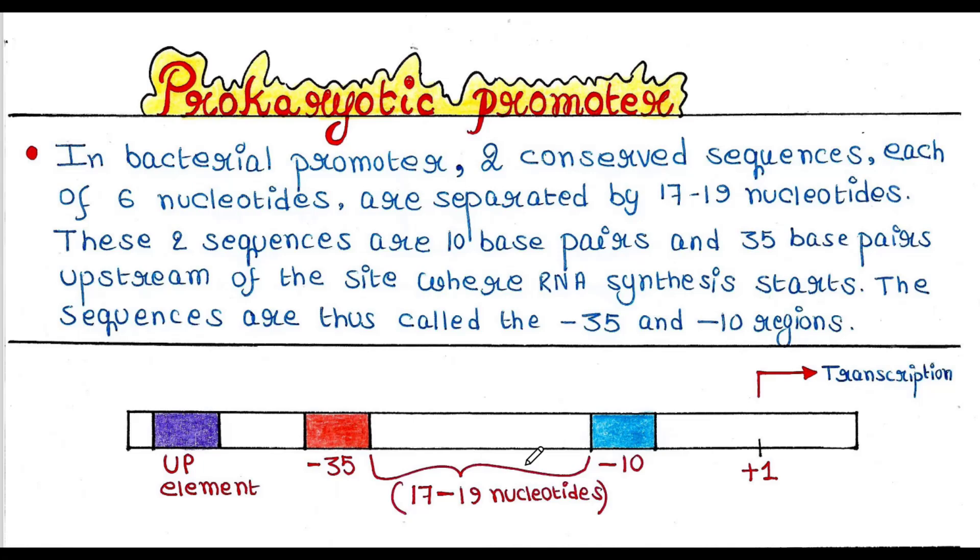These two sequences are 10 base pairs and 35 base pairs upstream of the site where RNA synthesis starts. This is the site where RNA synthesis starts. This is called plus 1. This is the start site. Transcription starts from this nucleotide, this plus 1.